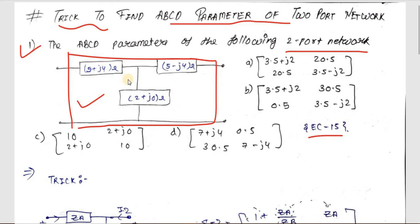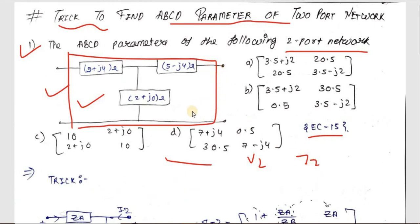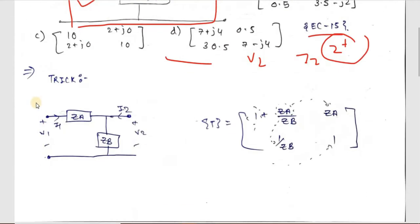We know the Z-parameter of a T-network is easy to find, but ABCD parameters are much more difficult. If you try this the traditional way, you first write the formula, then short-circuit the output port to find two terms, then open-circuit it to find the remaining two — wasting around two or more minutes. So I will not suggest the traditional way; we will use a trick instead.